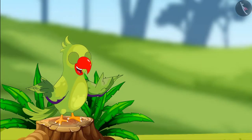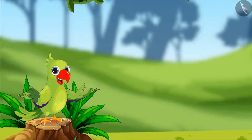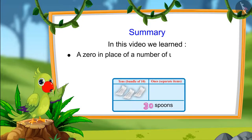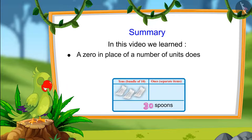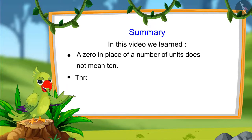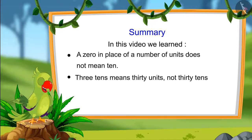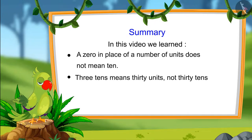So children, that's all for today. In this video we learned that zero at the end of a number does not mean 10, and three tens means 30 units — not 30 tens. I hope you understood this topic. Bye friends!